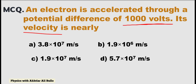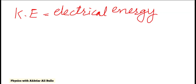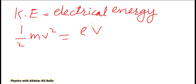To calculate the velocity of the electron, we will use the formula: kinetic energy is equal to the electrical energy. So kinetic energy equals (1/2)mv² = eV, where e is the charge on the electron and V is the electric potential. After simplifying, we get the equation for velocity.